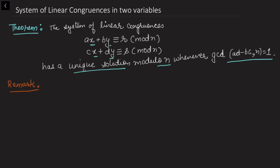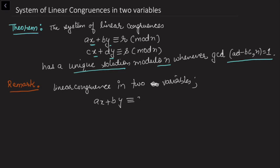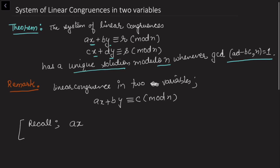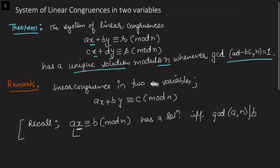Before proceeding to the proof, let me consider a single linear congruence in two variables, something like ax + by ≡ c (mod n). To understand this, I need to recall the solution of a linear congruence in one variable: ax ≡ b (mod n). This has a solution if and only if gcd(a, n) divides b, where b is generally taken as a remainder less than n.